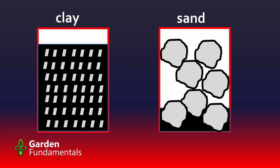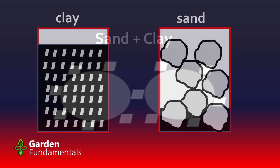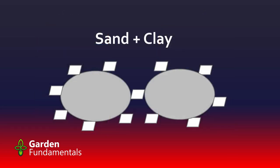Sand tends to dry out very quickly, which can be a problem. Neither clay nor sand is really that great. But when we combine the two we get the best of both worlds. Two large sand kernels mixed with some clay — the small clay particles surround the sand particles, and now we have something with smaller spaces that holds some air and also holds a fair amount of water. This mixture is actually better than either one separate.